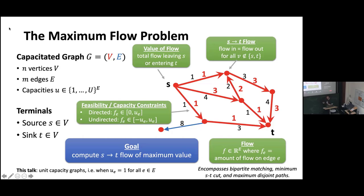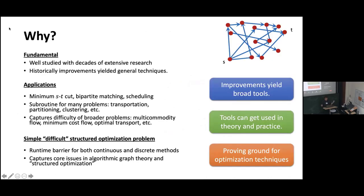In this talk we focus on the special case of unit capacity or unweighted graphs, where all capacities are one. This special case encompasses a number of fundamental problems, like computing a maximum cardinality matching in a bipartite graph, computing a minimum cut, or computing the maximum number of edge-disjoint paths between S and T. It's a very fundamental problem and a stepping stone towards solving a variety of graph optimization problems.